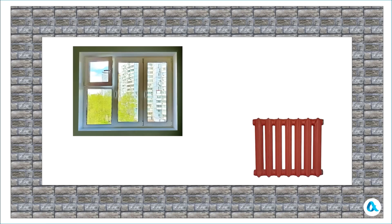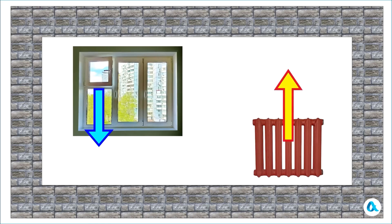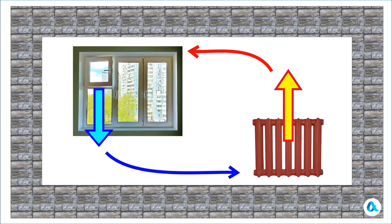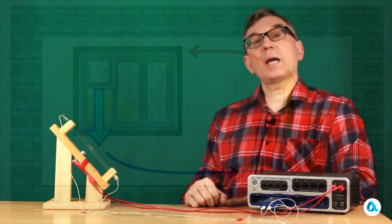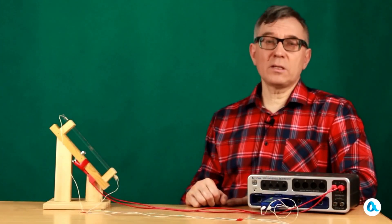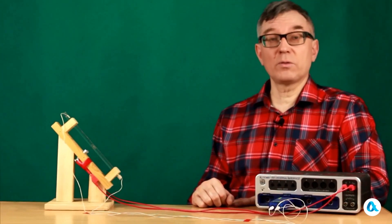Now let's observe how air convection takes place inside a room. Fresh cold air from the windows moves downward, which is why radiators are positioned at the bottom, closer to the floor for efficient heating. Heated air from radiators rises upwards toward the ceiling. Due to the established circulation, the air mixes throughout the entire room, resulting in uniform distribution.